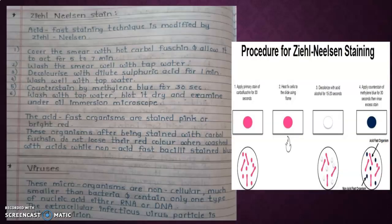But non-acid-fast bacteria do not have this peculiar chemical composition, so they are decolorized by acid and alcohol and counterstained by methylene blue, appearing blue. Generally this method is used to detect acid-fast bacteria. Ziehl-Neelsen stain acid-fast staining technique is modified by Ziehl-Neelsen. Cover the smear with hot carbol fuchsin and allow it to act for five to seven minutes. Wash the smear well with tap water. Decolorize with dilute sulfuric acid for one minute.